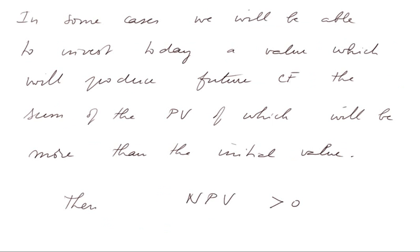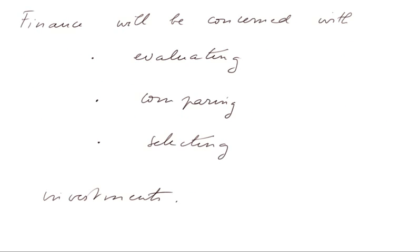In some cases, we will be able to invest today a value which will produce future cash flows the sum of whose present values will be more than the initial value. In that case, the net present value of the investment will be greater than zero — which is, by the way, the case of the farmer setting aside part of the crop to produce a future harvest. To summarize and finish this lesson: in finance, we shall be concerned with evaluating, comparing, and selecting investments.